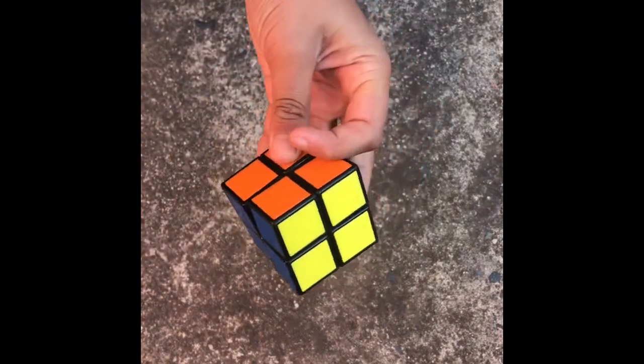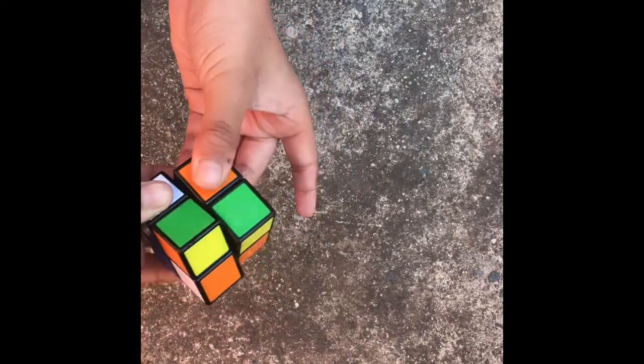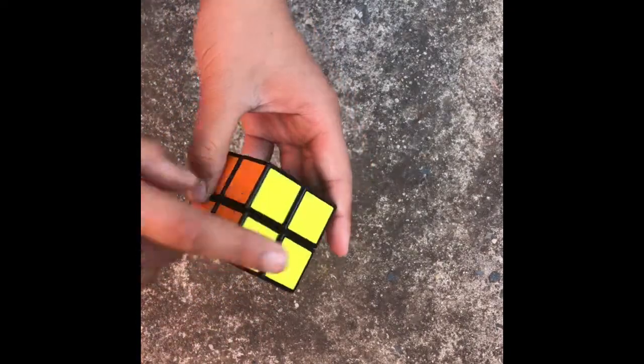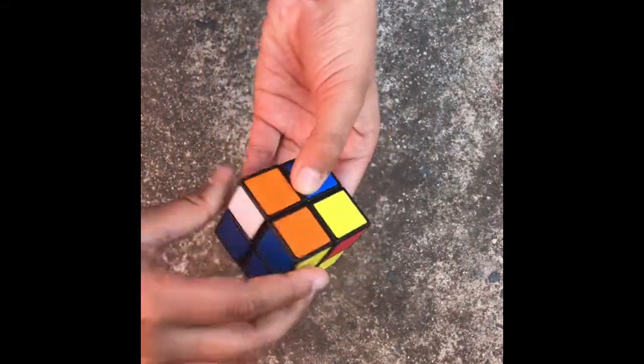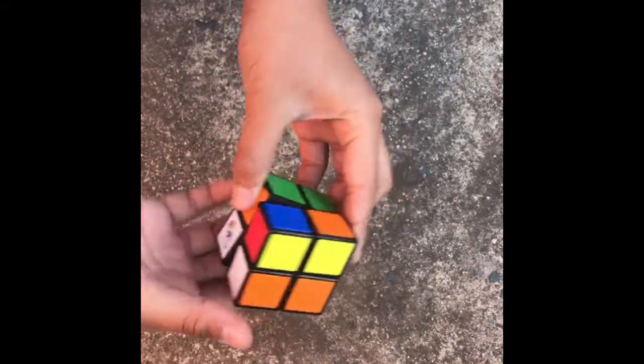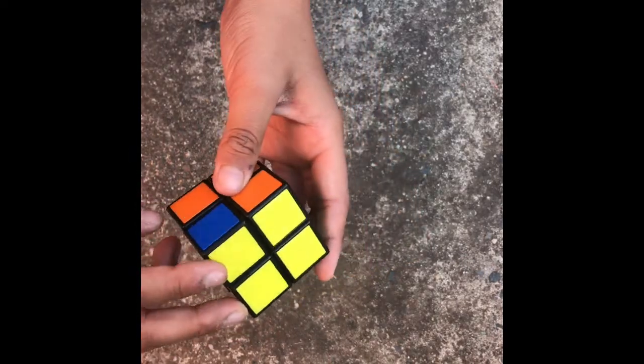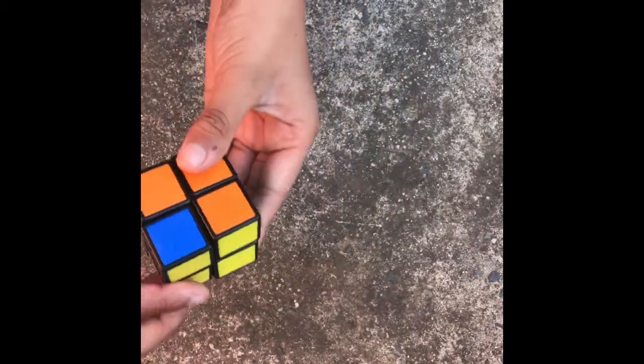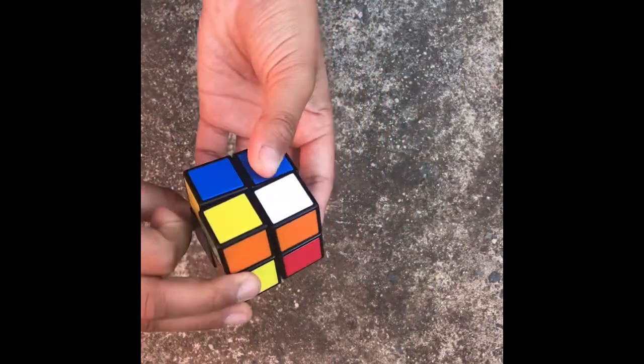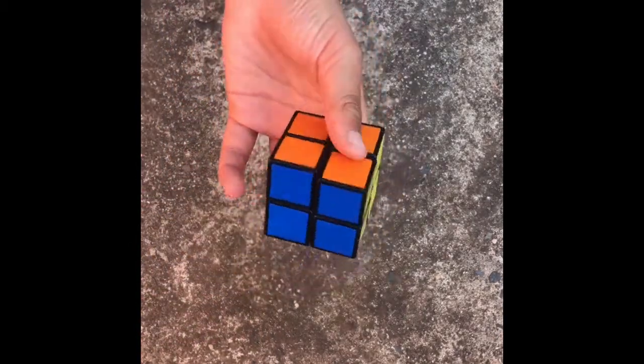Because these algorithms, the 2x2 algorithms, can swap edges. Obviously there are no edges on this cube. So like, if I were to do a J-perm, it would swap two corners on the 2x2 and it would swap two edges, but obviously there are no edges. So that's kind of what I mean by CLL and CMLL. So if you use Roux, then CLL is a good method.